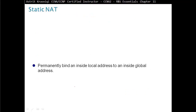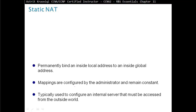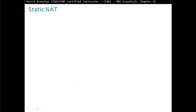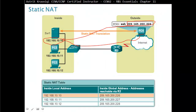Static NAT permanently binds an inside local address to an inside global address. Mappings are configured by an administrator and remain constant. It is typically used to configure an internal server that must be accessible from the outside world — for example, a server at 192.168.10.10 translated to 209.165.200.226. It is a one-to-one mapping, so it does not reduce the number of IPv4 addresses needed, but it is useful for servers.